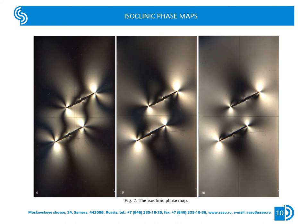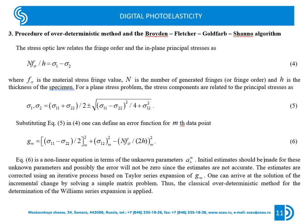To separate the presence of the stress components, we observed the isochromatic phase maps for the specimen considered — the rectangular plate with two interacting parallel inclined cracks.